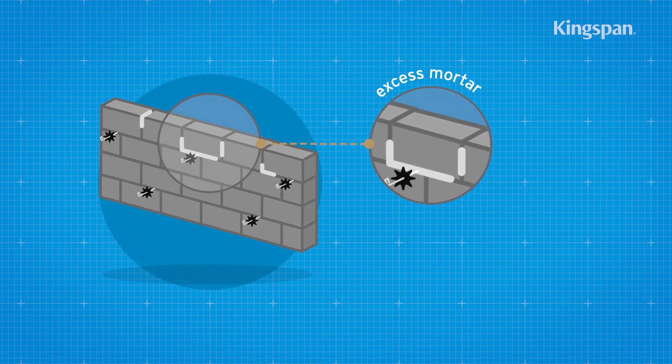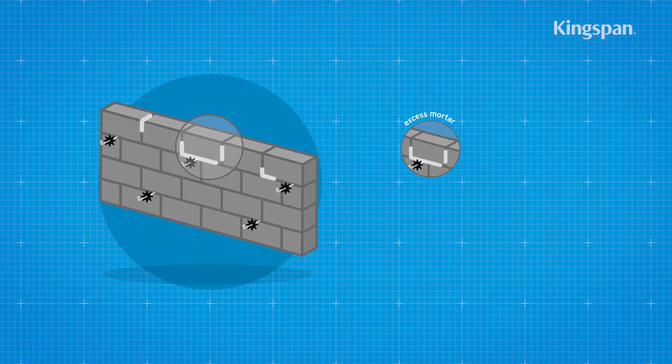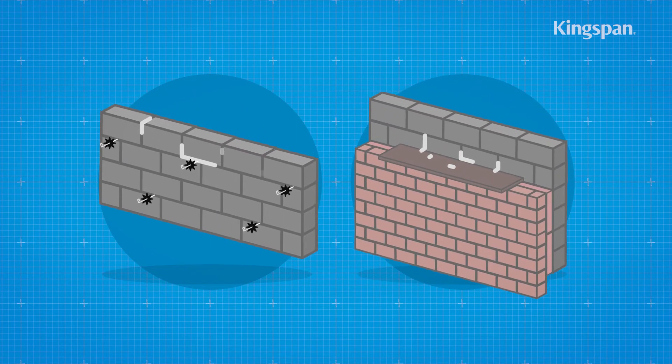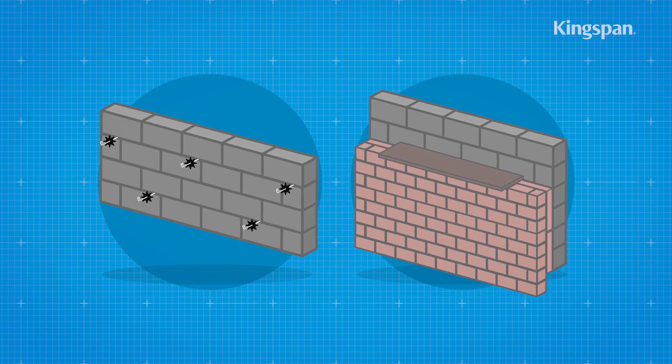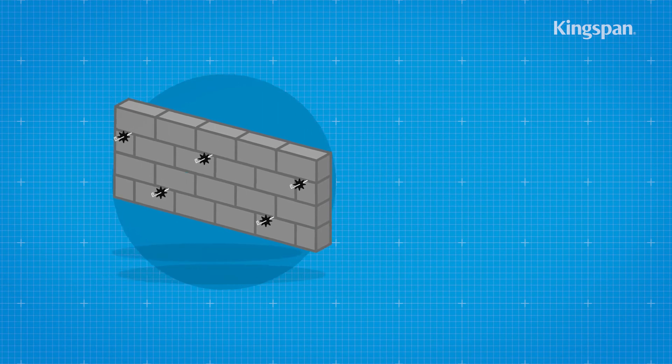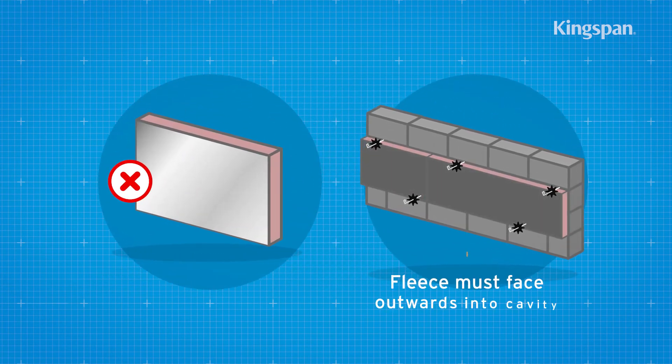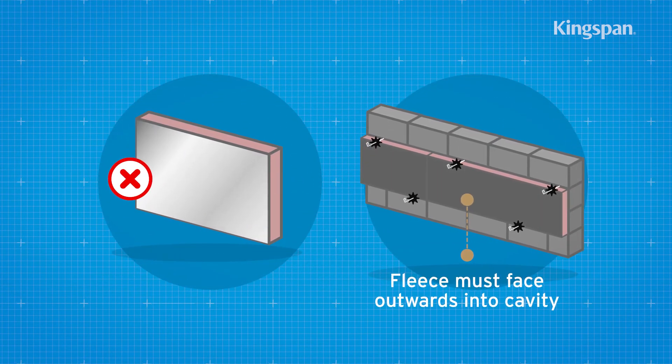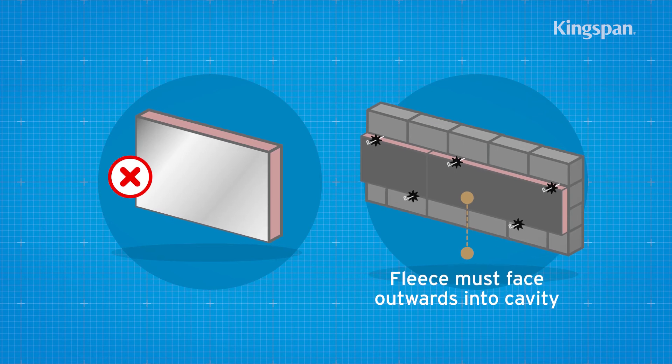After raising each section of the inner leaf and before installing the insulation board, excess mortar should be removed and mortar droppings cleaned from exposed edges of the installed insulation boards. The first row of insulation boards should now be installed between the two rows of wall ties.